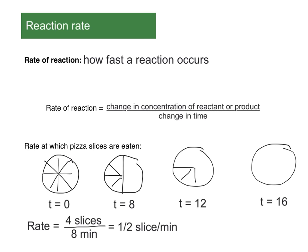And then we could also do this from eight to 12. So that's a change in time of four minutes. And we've actually lost two slices. So two divided by four, again, half a slice per minute. And you can see that that rate should be constant throughout, just independent of how much time has passed or how many slices are eaten. And the ratio between the two should remain constant.